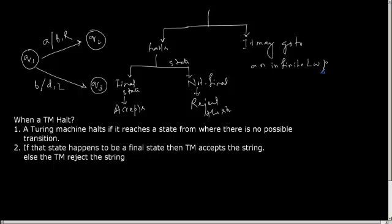And if it may enter into an infinite loop, then also it does not reject the string, it enters into an infinite loop. I cannot decide whether I can accept or reject the string. So such strings are called as undecidable. The Turing machine cannot decide whether to accept or reject the string.